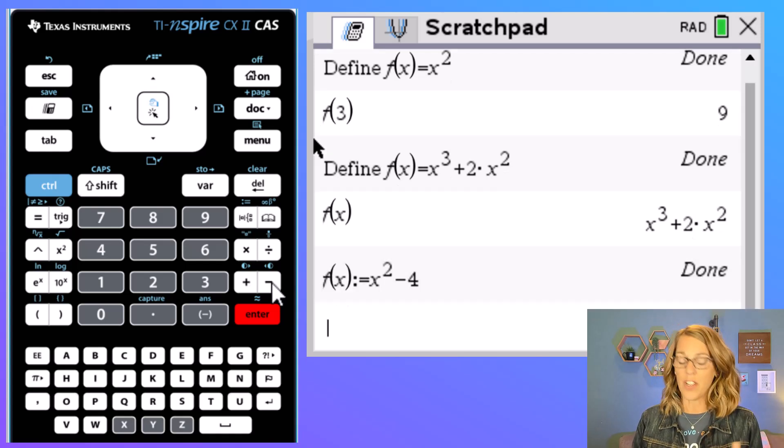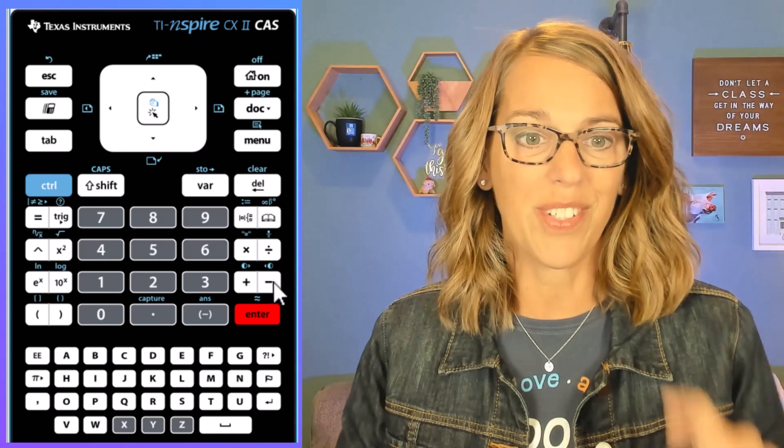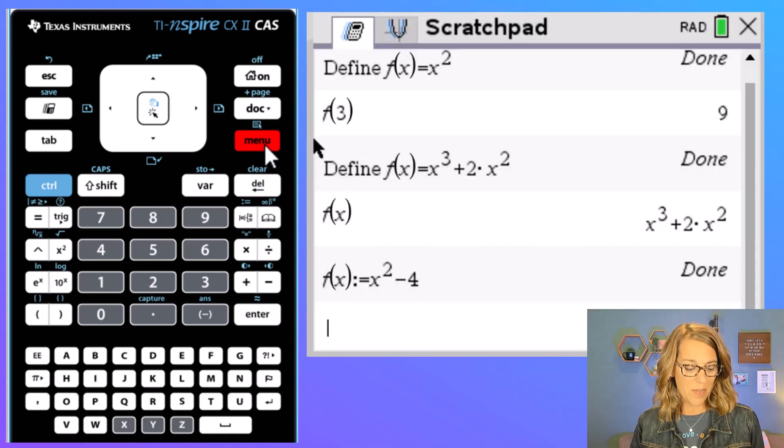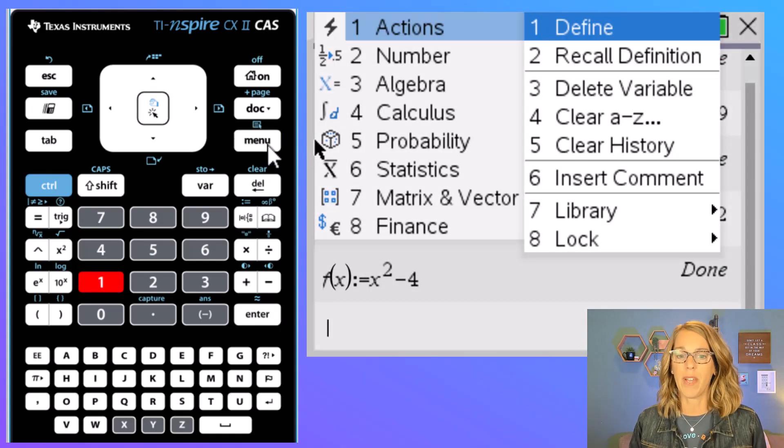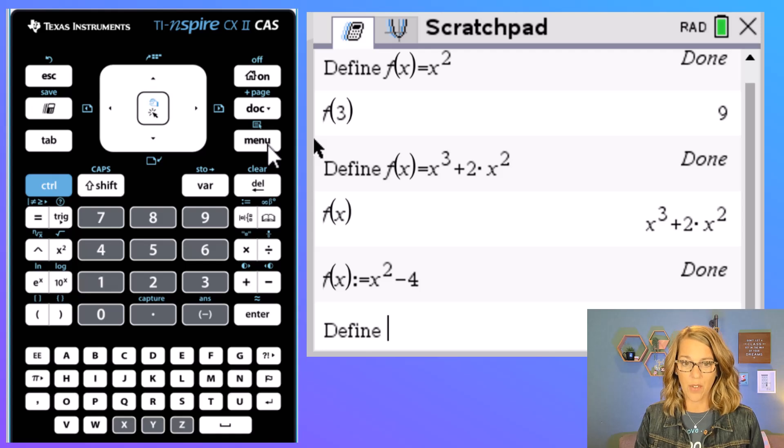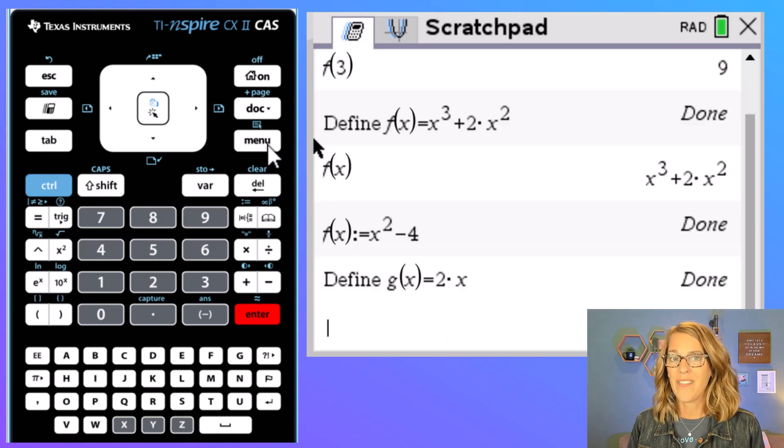Now I can define a couple of functions here. I like to use the menu. I think this is the most efficient way to get to that define feature. I'm going to do menu and then number one followed by number one. So let's define also a g of x. So I'm going to do g of x is equal to, let's just do a really simple 2x there. Now I've got some really great tools that I can use.